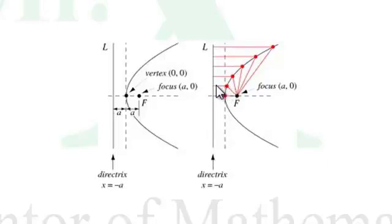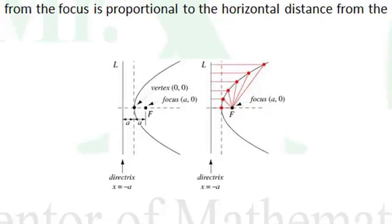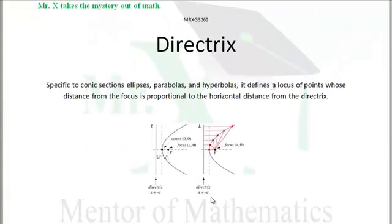Now I say horizontal distance because this directrix happens to be vertical. If we had a parabola that opened upward, our directrix would be horizontal and our distance to it would be vertical.